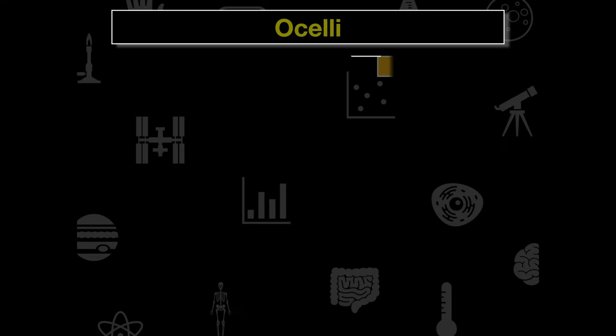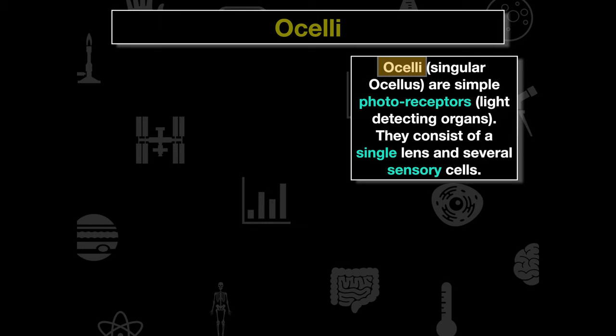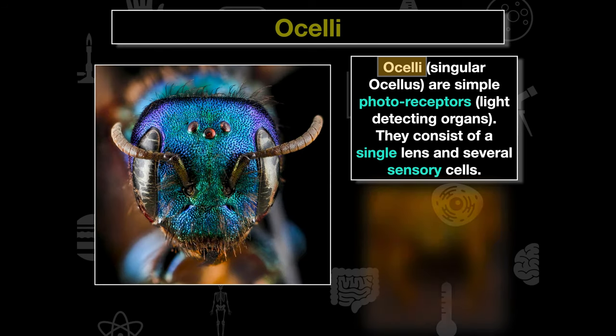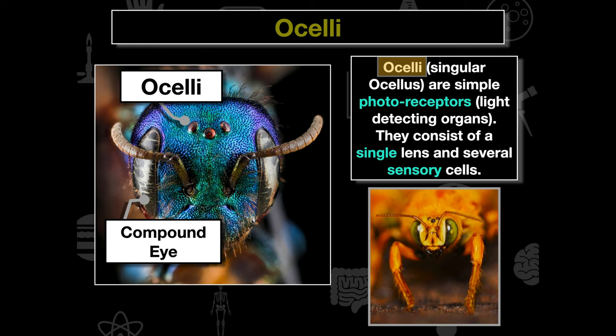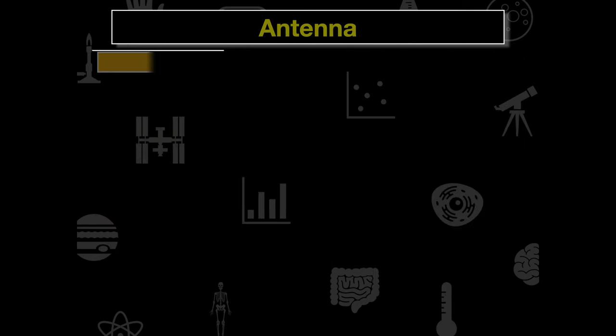The ocelli are simple photoreceptors — primitive eyes that detect light. They consist of only a single lens, and we can see three of them on the insect. They are much smaller and simpler than the compound eye. They enable organisms to sense light sources that human eyes cannot, such as ultraviolet radiation. Ocelli are especially important for bees and butterflies that feed on nectar, helping them identify the parts of flowers where nectar is located.